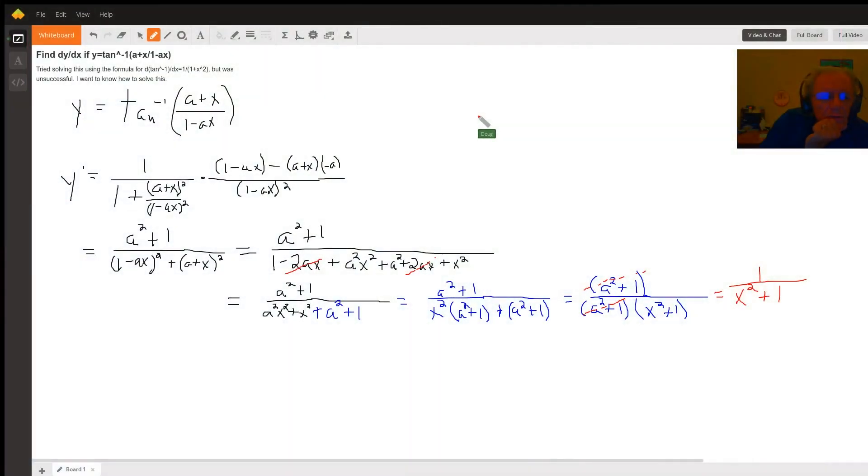Okay, it's correct to use the formula that the derivative of the inverse tangent function is 1 over 1 plus x squared, but then you have to use the chain rule to take the derivative of the inside.